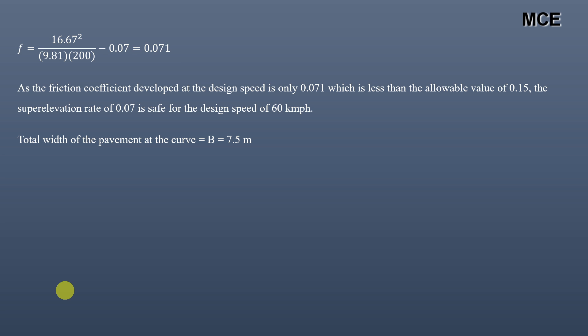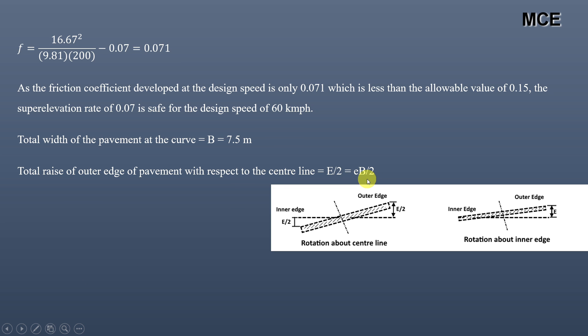We take super elevation e = 0.07. When rotating the pavement about the center line, the total raise of the outer edge of the pavement equals e × B / 2, as shown in the figure. With e = 0.07 and pavement width B = 7.5 m, the total raise = 0.07 × 7.5 / 2 = 0.263 meters.